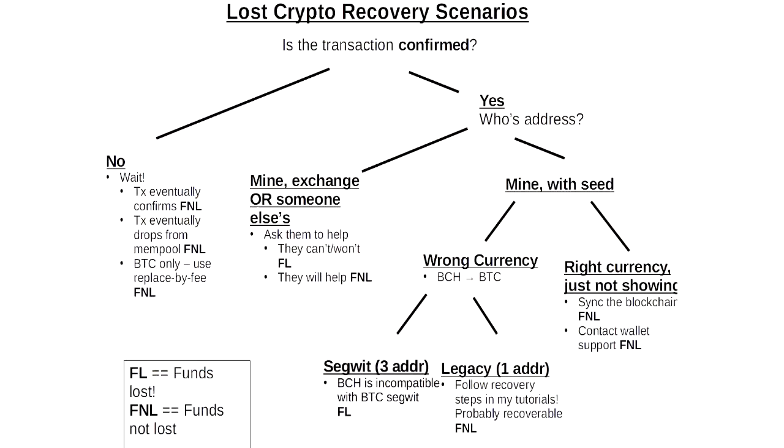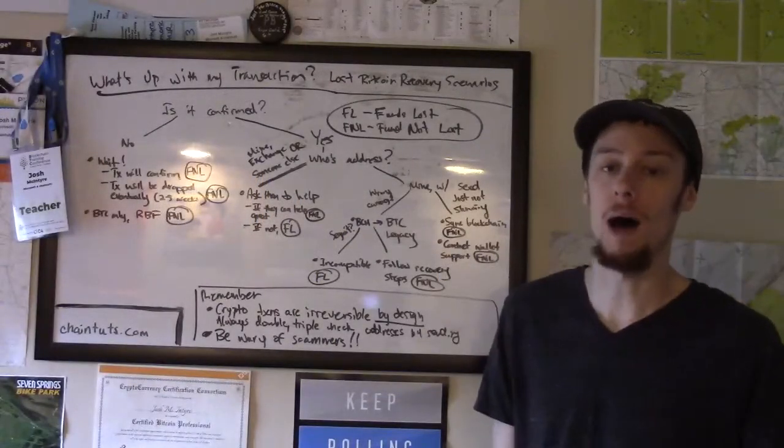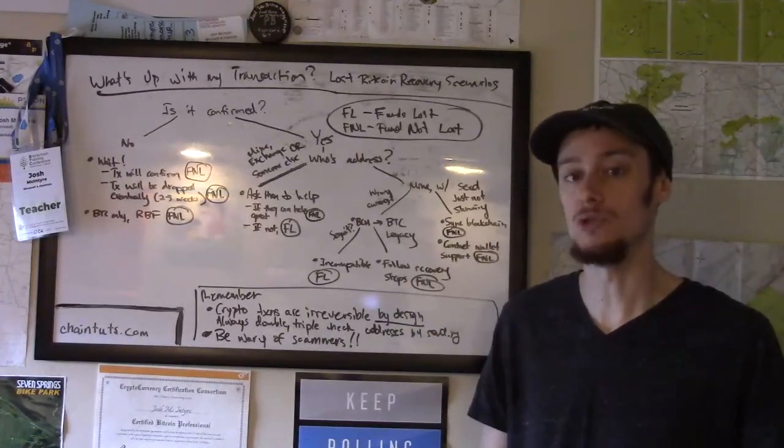So this is definitely not a comprehensive list of all the scenarios that you can go through, but this is a flowchart about some of the most common scenarios that you might find yourself in. I do get asked these questions a lot, and it's unfortunate in cases where funds are permanently lost, and there's nothing that anybody can do about them. So I'm going to end with a couple of important reminders when it comes to using cryptocurrencies.